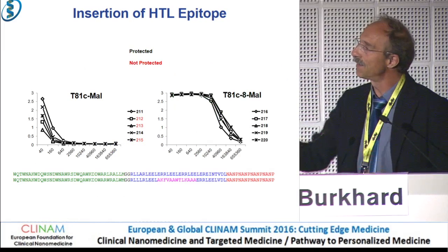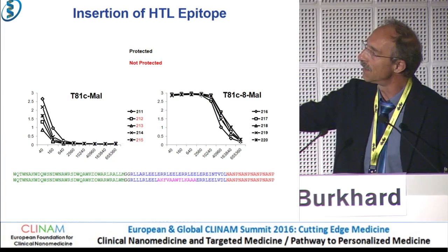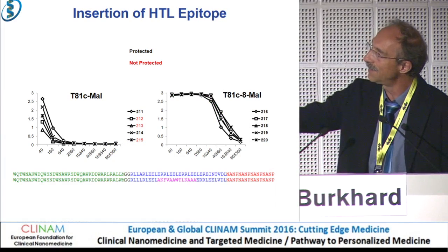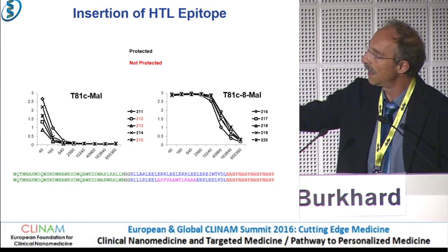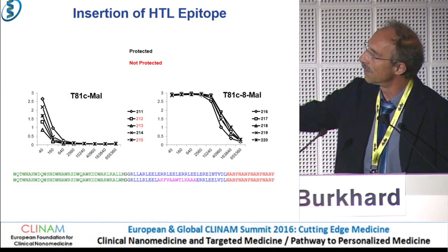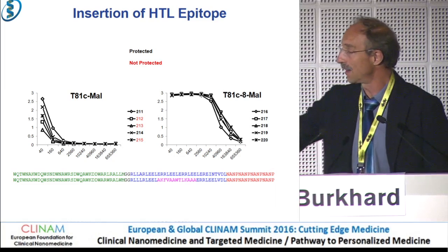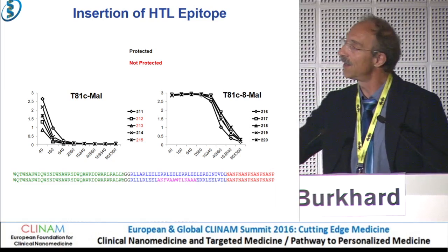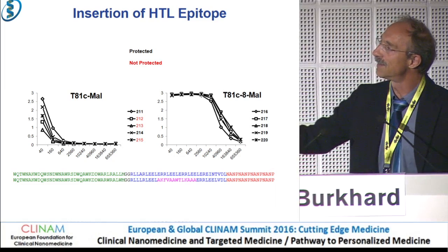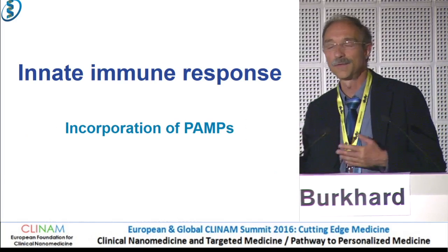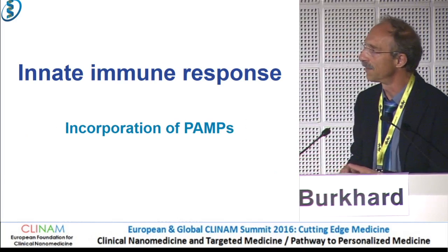Looking at the immune response — on the left side, without T-cell help; on the right-hand side, with T-cell help. This is an ELISA, and you can see there is a huge improvement in the immune response.